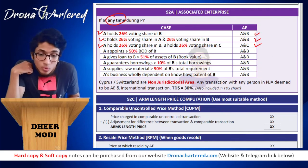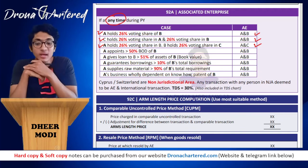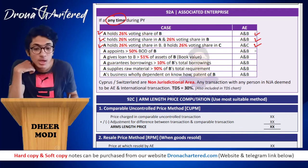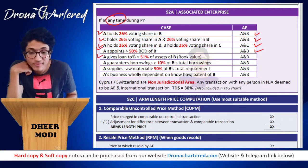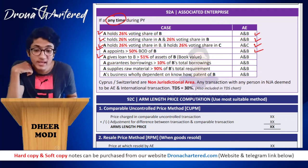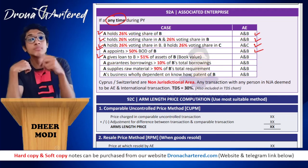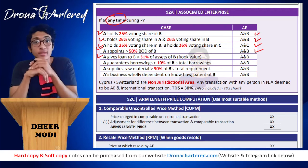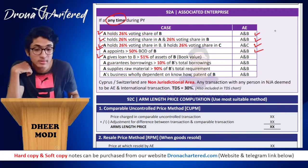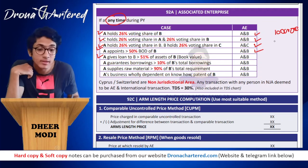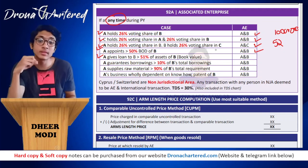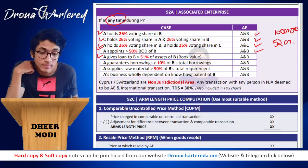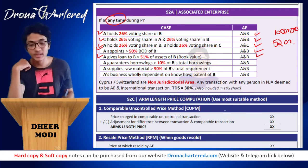Fourth condition: if A appoints more than 50% of the board of directors of B, then A and B are associated enterprises. Fifth condition: if A gives a loan to B greater than 51% of the book value of assets of B — for example, if B's assets are 100 crores and A gives a loan of 52 crores — then A and B are associated enterprises.